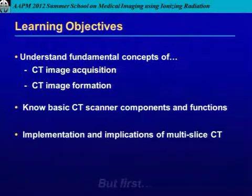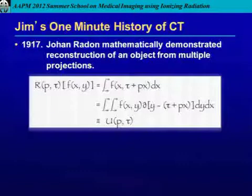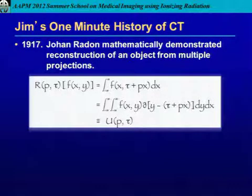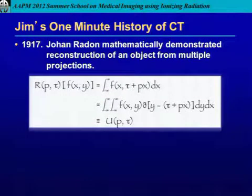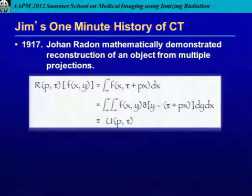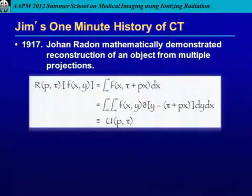Before we get into that, I want to give you my one-minute history of CT. In 1917, Johann Radon mathematically demonstrated reconstruction of an object from multiple projections — quite a long time ago. The problem was that the equations were so complex and complicated that it wasn't really practical to carry them out.